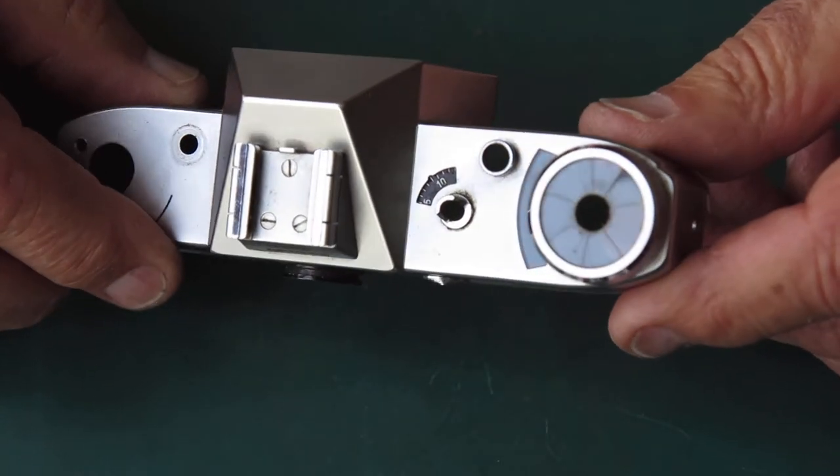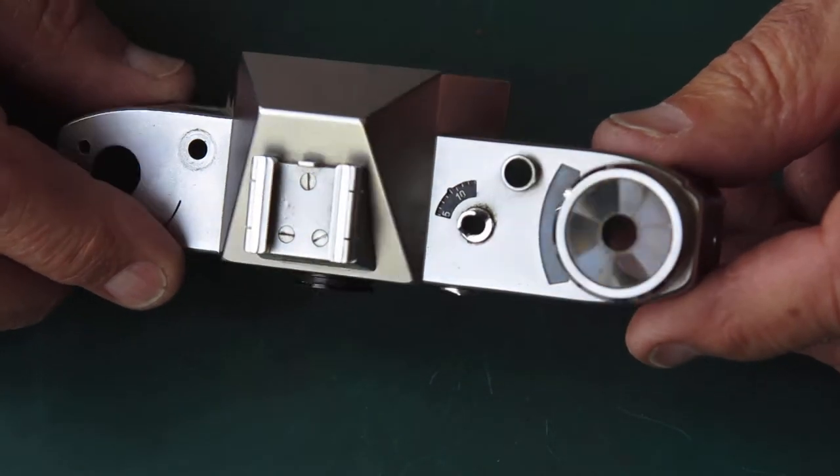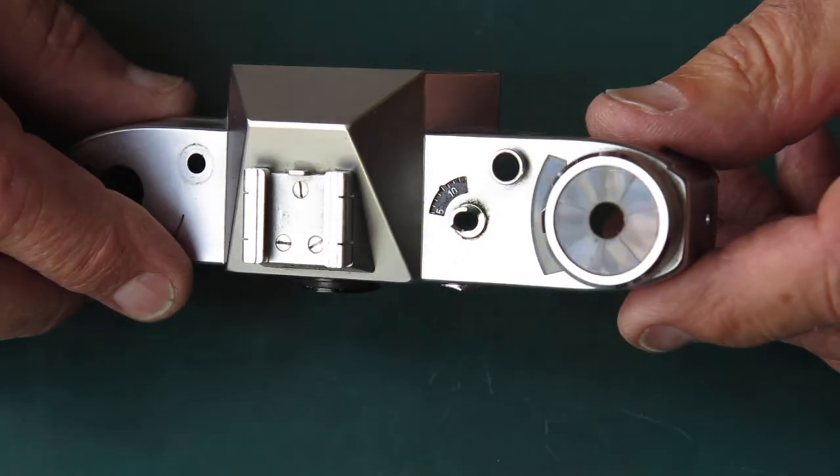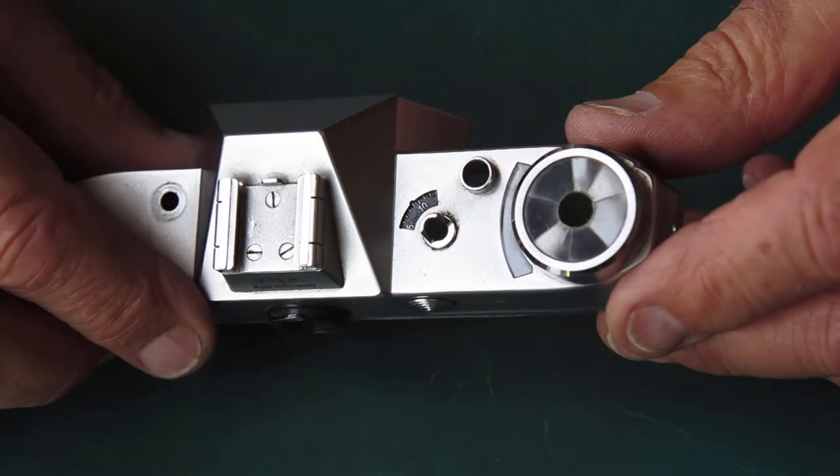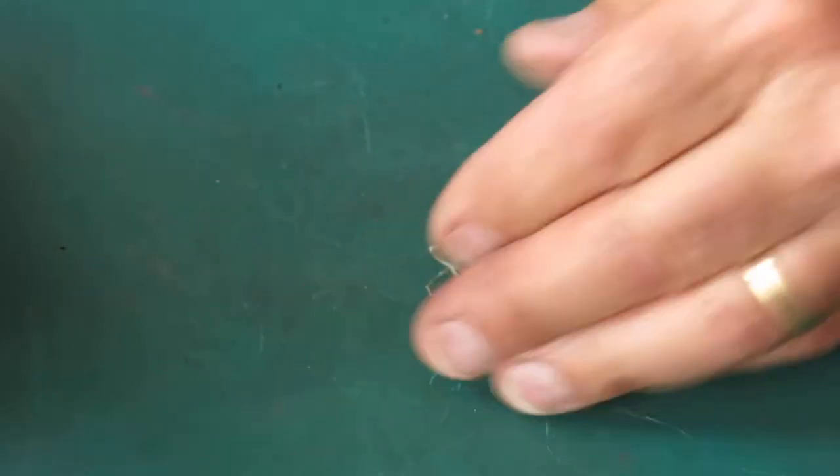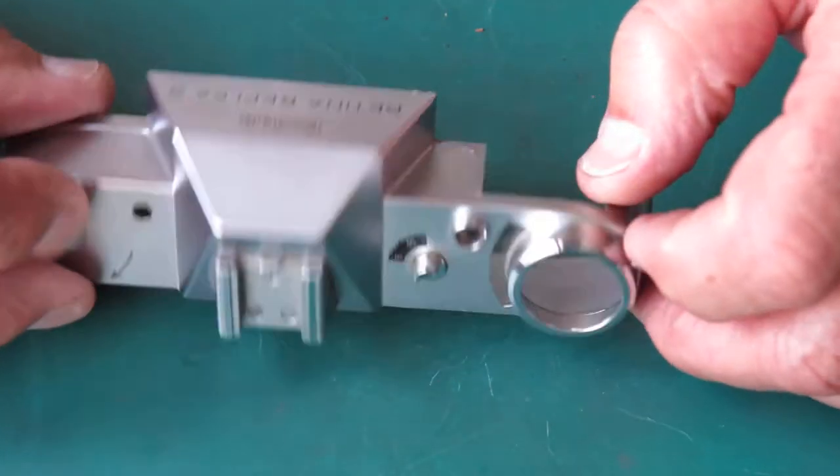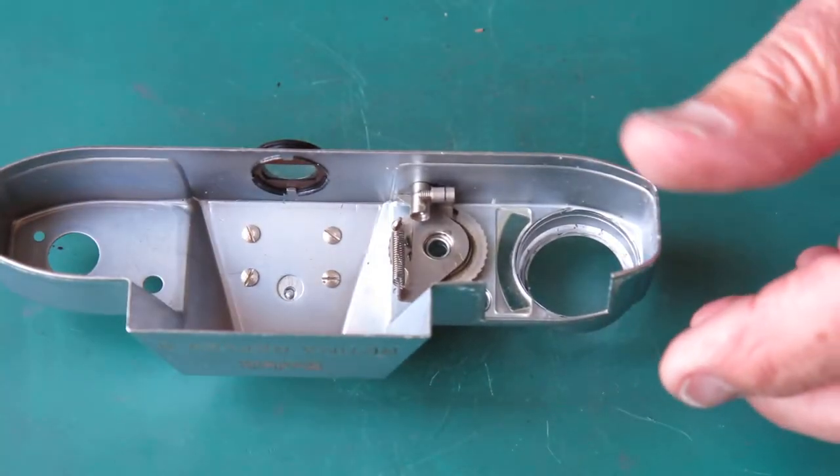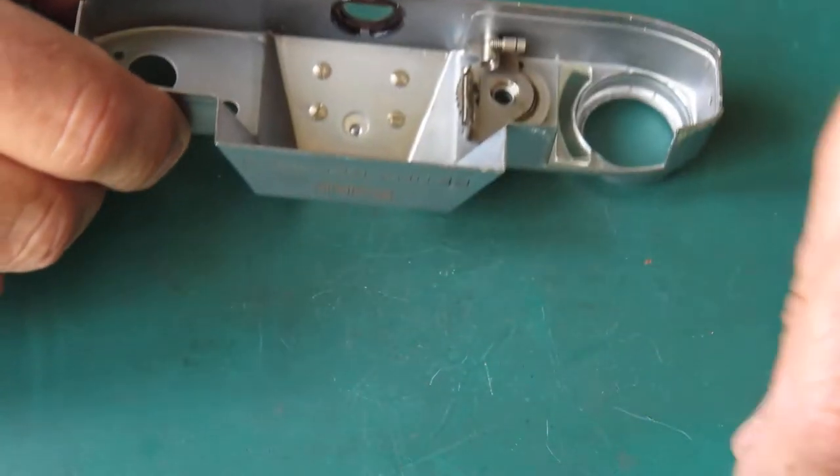Now the major shortcoming of this top cover is clearly this meter window there. You can see how many cracks that's got. I mean, that's just bits, basically. It's just held in there by good luck more than anything else, and unfortunately it's going to have to come out. There you go. That's where, if I hadn't done that, it would have done it for the owner as soon as they went to use it.